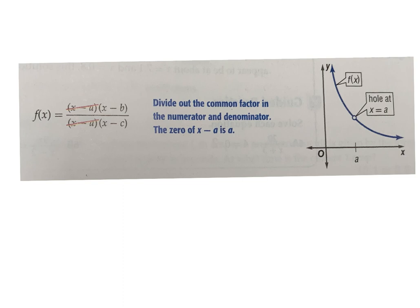When you factor a rational function, notice that some discontinuities are removable and some are not. If a factor cancels between numerator and denominator, that creates a hole in the graph rather than a vertical asymptote. If a factor does not cancel, that's a vertical asymptote — a dashed line the graph approaches but never touches. For a hole, to find its exact location: take the x-value where the cancellation occurs, substitute it into the simplified (cancelled) expression, and the result gives you the y-value of the hole.